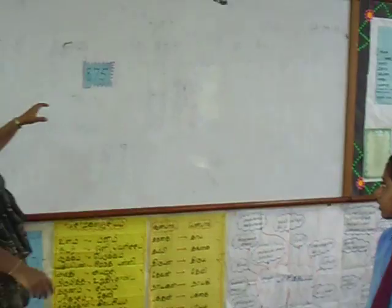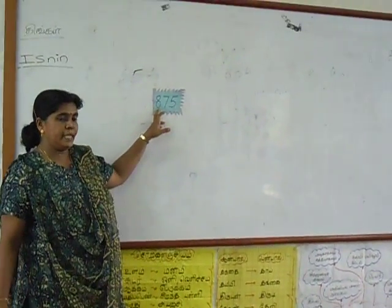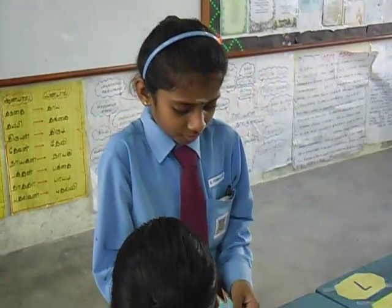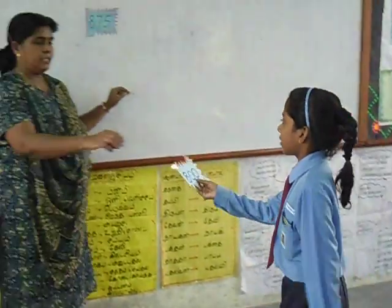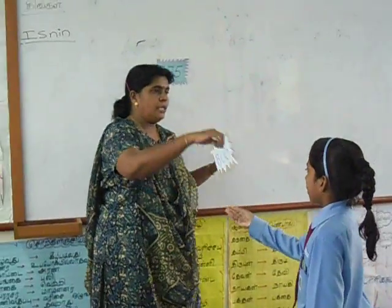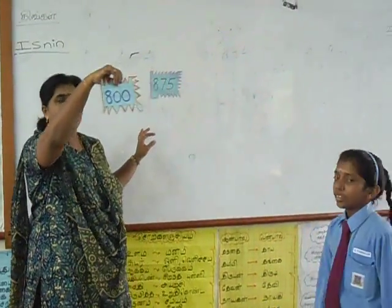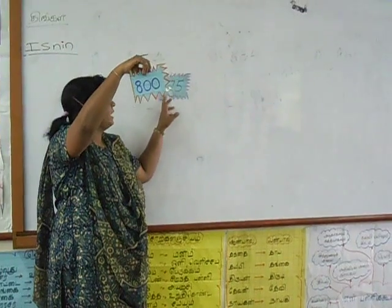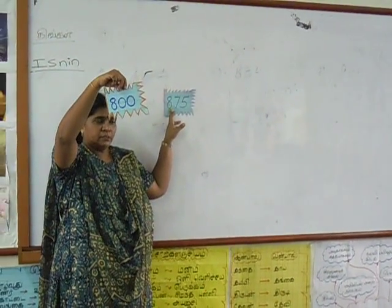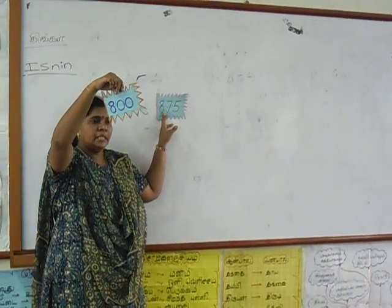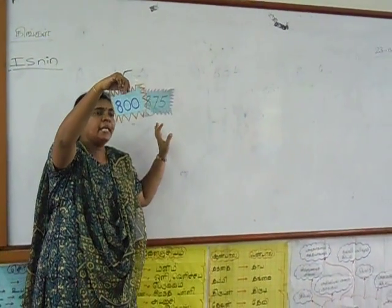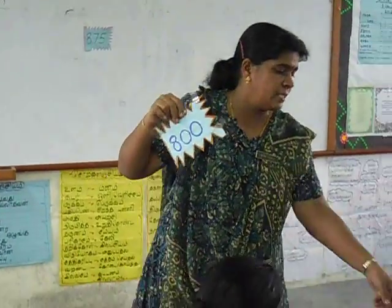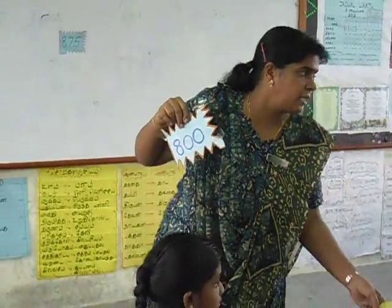Take one number — digit value for A. Okay, digit value for A. Is it right? Yeah. So what is the value for A? 800. Wow, the correct answer — give a clap!